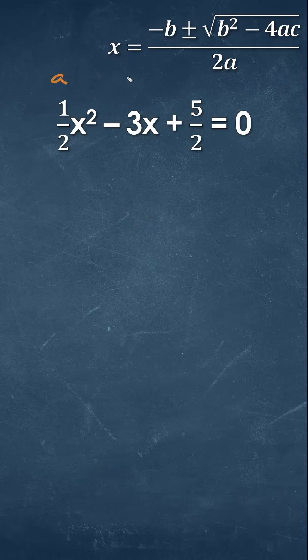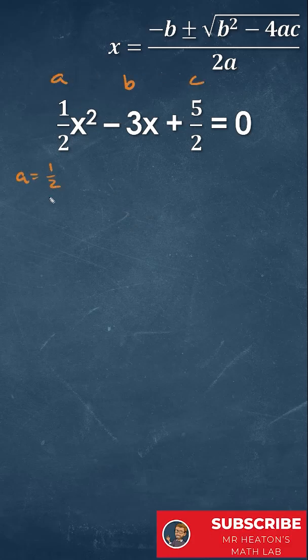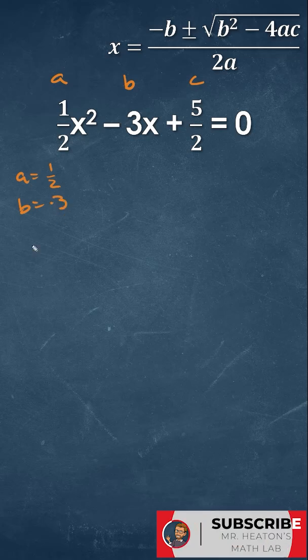When we solve for our quadratic, we need to figure out what our a, b, and c is. So we have a is equal to 1 half, b is equal to negative 3, and c is equal to 5 over 2.